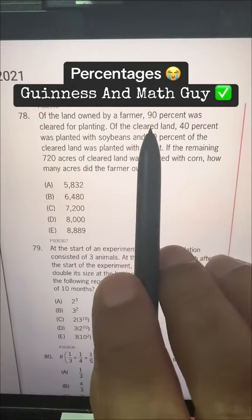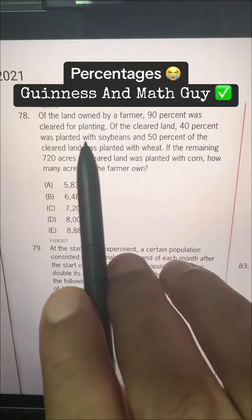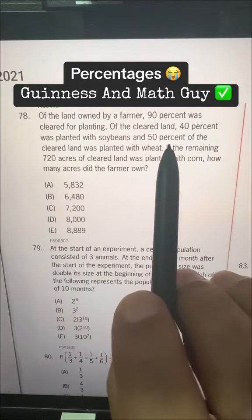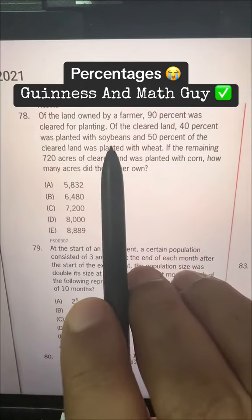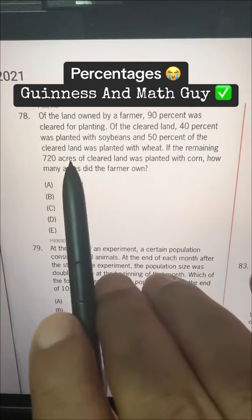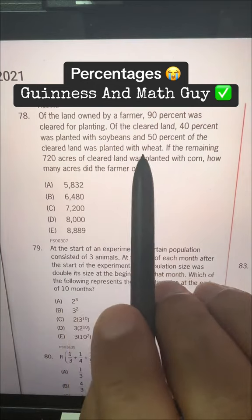Of the land owned by a farmer, 90% was cleared for planting. Of the cleared land, 40% was planted with soybeans and 50% of the cleared land was planted with wheat.